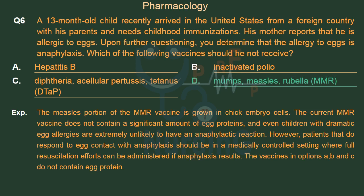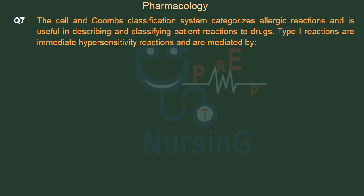The measles portion of the MMR vaccine is grown in chick embryo cells. The current MMR vaccine does not contain a significant amount of egg proteins, and even children with dramatic egg allergies are extremely unlikely to have an anaphylactic reaction. However, patients that do respond to egg contact with anaphylaxis should be in a medically controlled setting where full resuscitation efforts can be administered if anaphylaxis results. The vaccines in options A, B, and C do not contain egg protein.